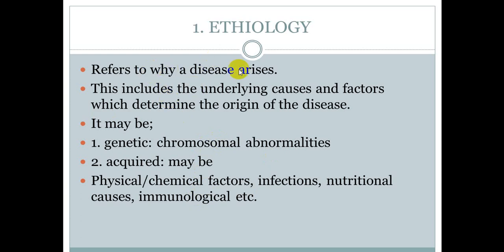Etiology refers to why a disease arises — disease kyun hoti hai, cause and origin of the disease. It includes the underlying causes and factors which determine the origin of the disease. It may be genetic — abnormalities of the chromosome — or it may be acquired, which may include physical, chemical factors, infections, nutritional, immunological, etc. For example, infections, nutritional deficiencies — jaise vitamin A ki kami ki wajah se blindness ho jata hai, vitamin D ki kami ki wajah se rickets ho jata hai — and autoimmune diseases, etc.